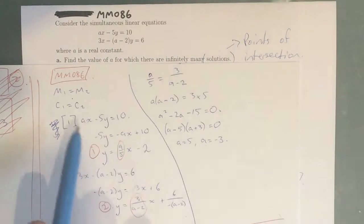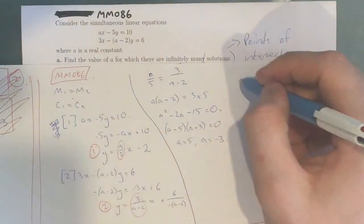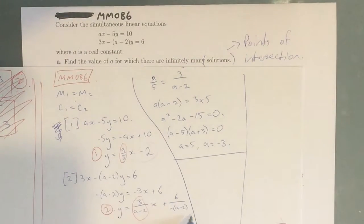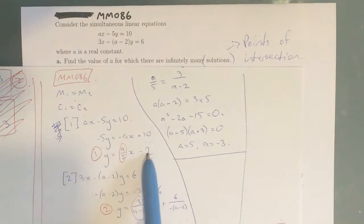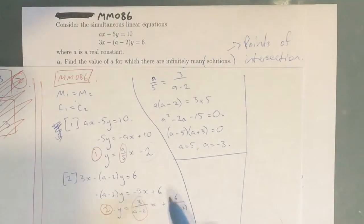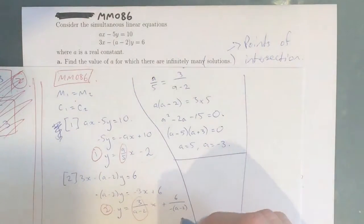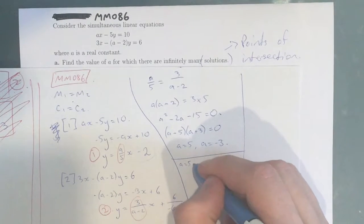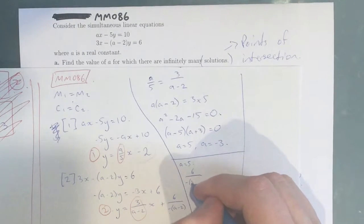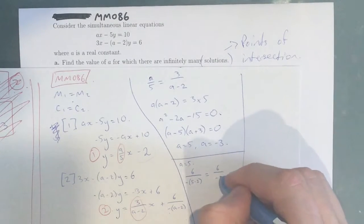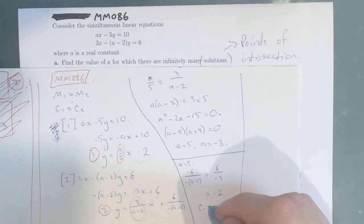Because we want infinitely many solutions, we need to check for what value of A does C1 equal C2. We know that our first C value is negative 2, so if we input an A value and the second equation's C comes out as negative 2, they're the same graph and there are infinitely many points of intersection. So when A equals 5, we have 6 over negative(5 minus 2), which equals 6 over negative 3, which equals negative 2. This means C1 equals C2, so when A equals 5, we have infinitely many solutions.